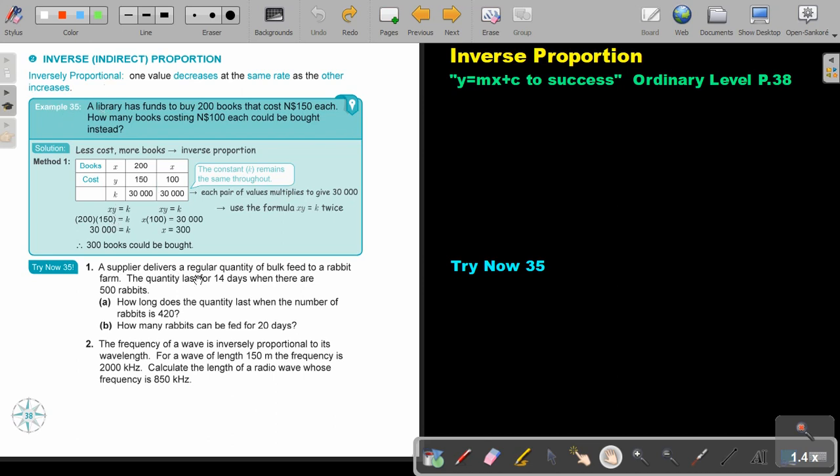Let's look at an example. A library has funds to buy 200 books that cost 150 each. How many books costing 100 each could be bought instead? So what's happening? The price of the books go down. You have this specific amount of money, so you will be able to buy more books. So the less cost, more books, and it's inverse proportional.